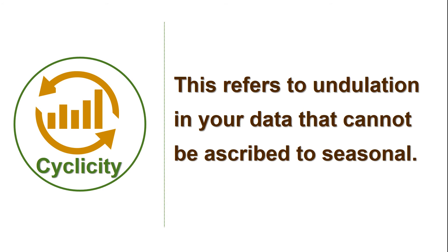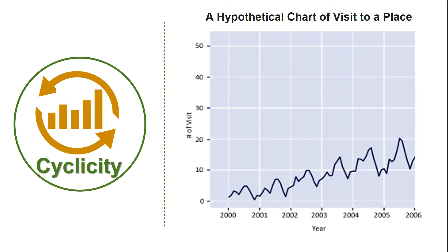The last but not least peculiarity of time series data is cyclicity. Cyclicity generally refers to undulation or fluctuation in your data that cannot be ascribed to seasonality. As the name suggests, it is a trend that goes in cycles. The cycle can either be long or short — that is, it is not fixed. I have put up a hypothetical chart denoting cyclicity. You can notice a pattern similar to seasonality, but different in the sense that the pattern is not occurring on the same month of the year, and the frequency also varies.